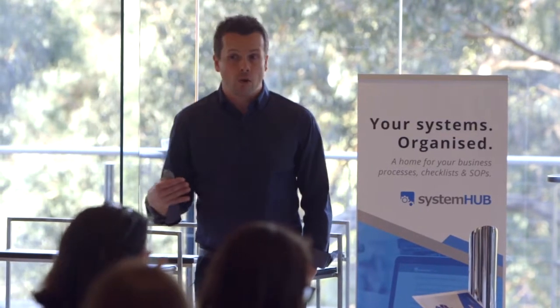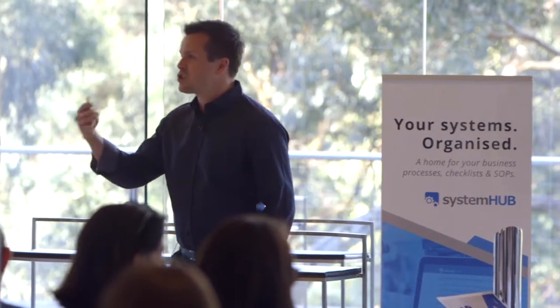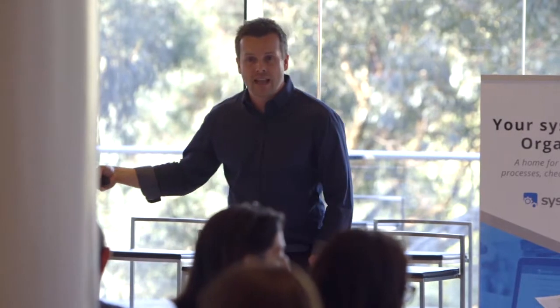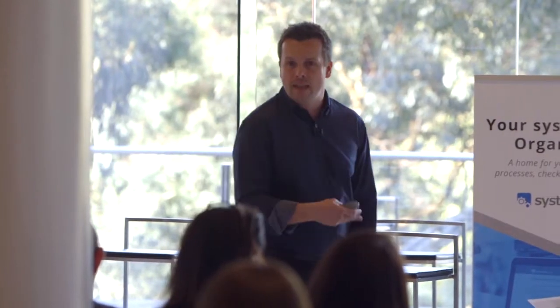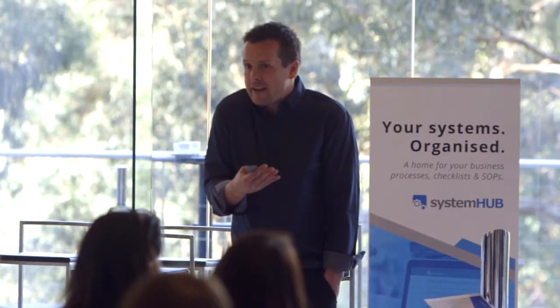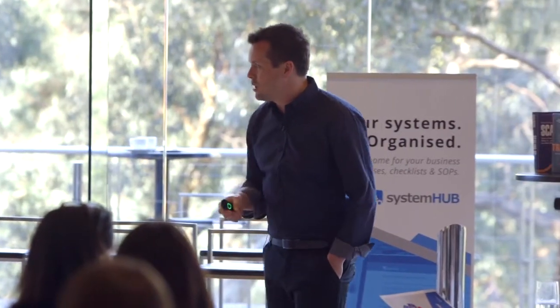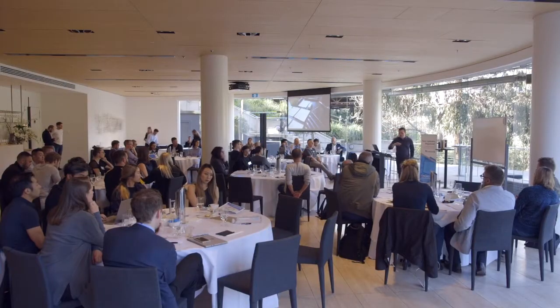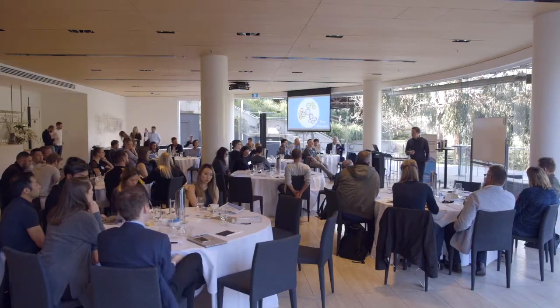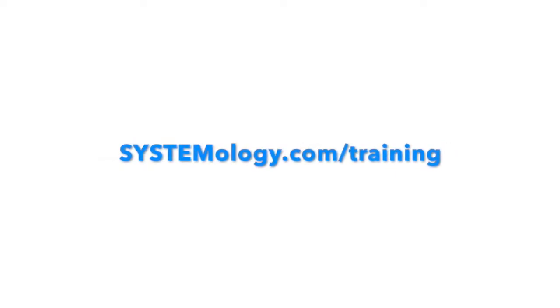By having systems and processes, everybody starts doing the same thing the same way, and then we can say our sales process gives us a conversion rate of 30% and everybody's following the same sales process. Now we can actually optimise because we know everybody's doing the same thing. If we make a change to the system or the process, the improvement we see in the numbers means something. That's why we need that baseline in place.